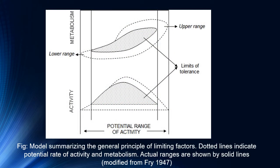This model summarizes the general principles of limiting factors as per Frey 1947. From this figure, it is clear that there always occurs a potential range for different activities like metabolism, which has two ranges: an upper range and a lower range. Between these two ranges exists the potential range of activity. Due to different factors like availability of resources and changes in climatic conditions, the animal generally shifts its range of activities. The dotted line represents the potential range of activities and the solid lines represent the actual range of activity of a species.